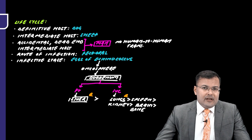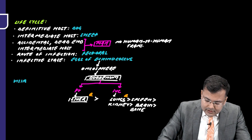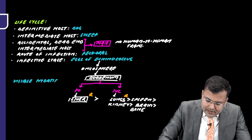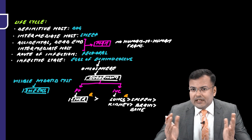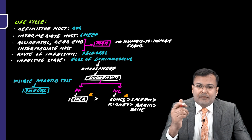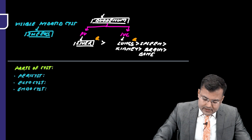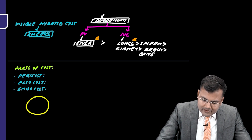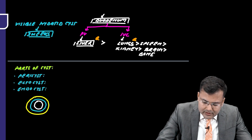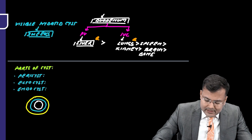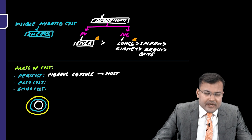A visible hydatid cyst develops 3 weeks after infection. A well-formed cyst has three layers: the outermost is the pericyst — a fibrous capsule derived from host tissue; then the ectocyst; and the innermost layer is the endocyst.